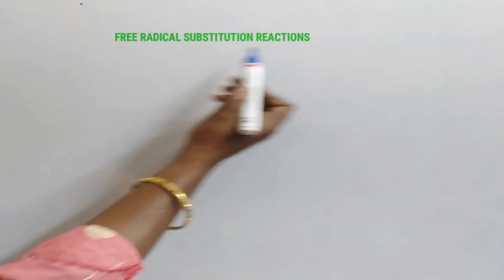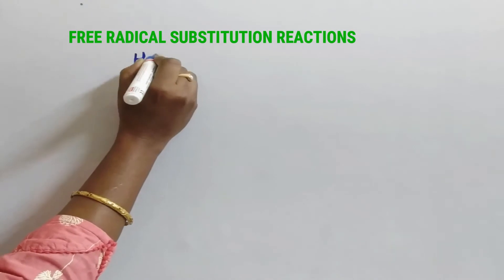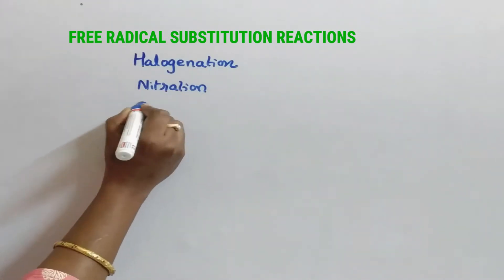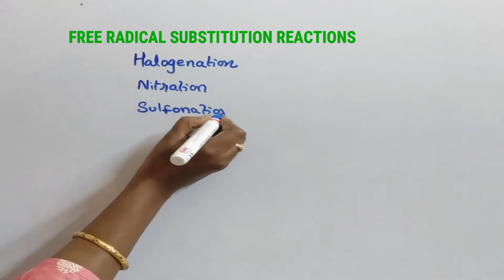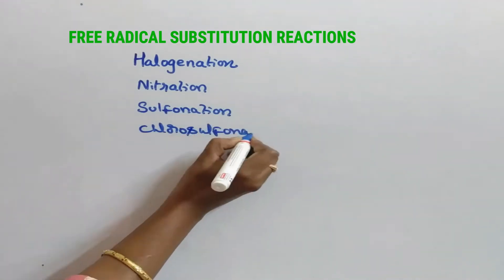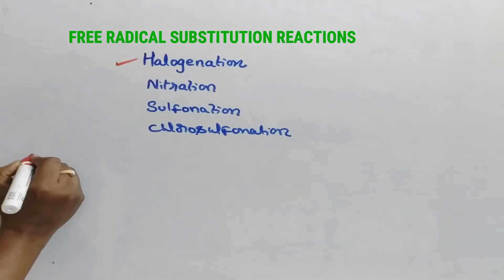Alkanes undergo free radical substitution reactions. Those are halogenation, nitration, sulfonation and chlorosulfonation. Let us see about halogenation.